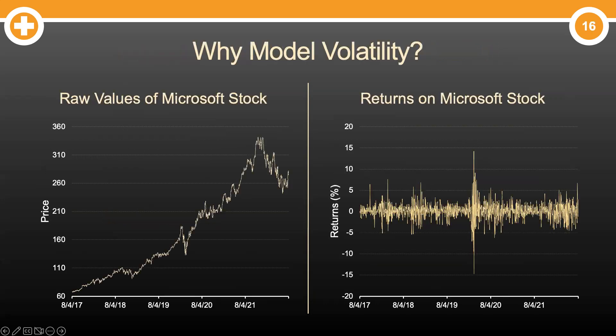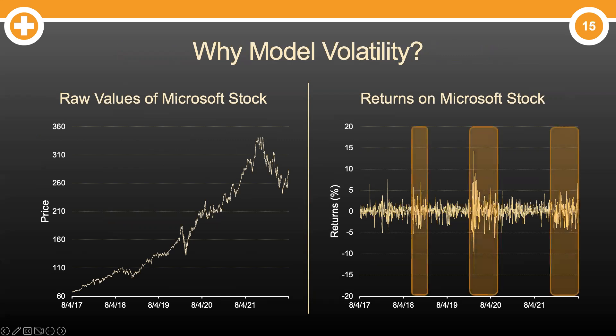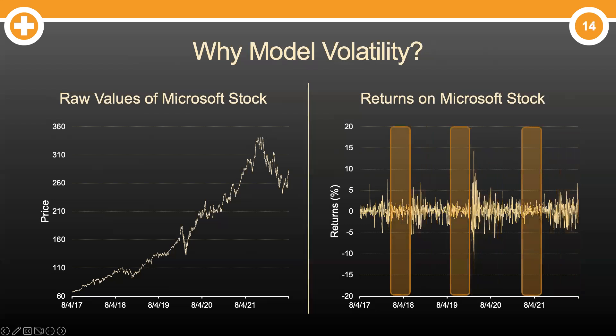Why are we modeling volatility? Here's a simple example. On the left, you see the raw values of Microsoft stock — those are hard to model. On the right, you see returns or percentage changes in Microsoft stock. In that right-hand plot, we can see how the prices change over time. Periods with high changes in values are referred to as periods of high volatility — notice how these tend to happen together. Periods with low changes in value are referred to as periods of low volatility, and again, notice how these periods tend to happen together. Because the periods of high and low volatility seem to not only change over time but have a pattern, that means we can model it.